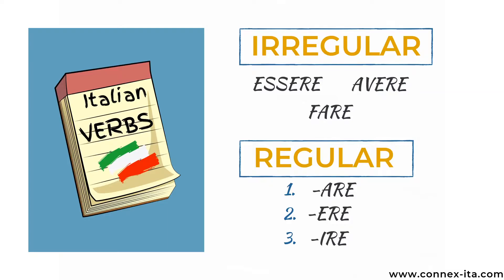The main difference is the way you conjugate them. The irregular verbs don't follow a predictable pattern in their conjugation, so you often need to know them by heart. Some common irregular verbs in Italian are essere (to be), avere (to have), and fare (to do). I've made specific lessons on how you conjugate and use these verbs, so in case you want to know more, you can watch them. On the contrary, as you can also guess from their name, the conjugation of regular verbs follows a regular pattern.